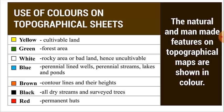Let's see the color codes: Yellow — cultivable land; Green — forest area; White — rocky area or badland; Blue — perennial line wells and perennial streams; Brown — contour lines and their heights; Black — all dry streams and surveyed trees; Red — permanent structures.